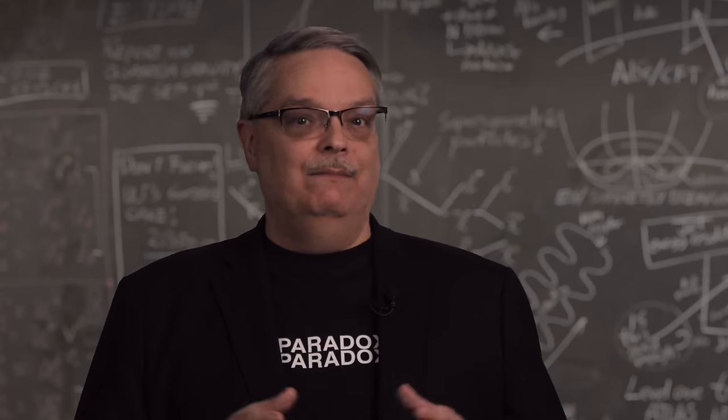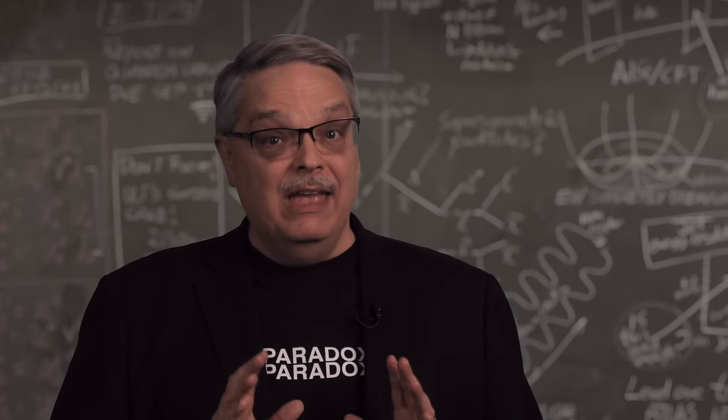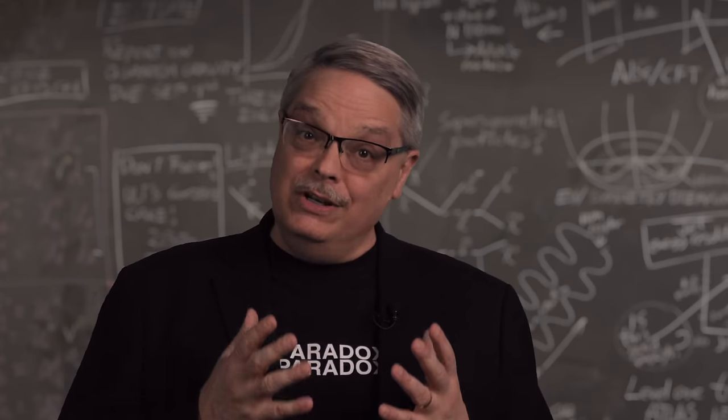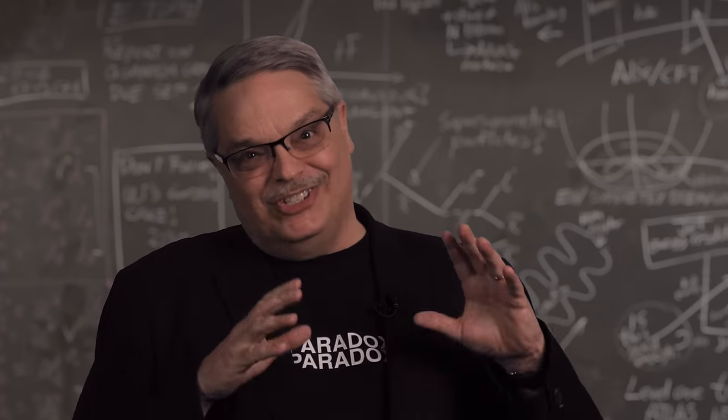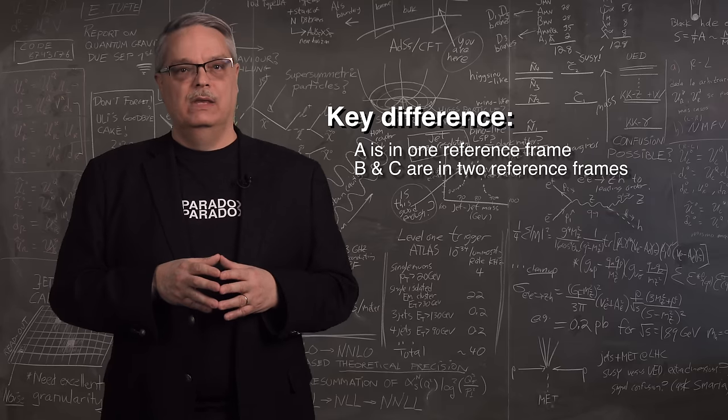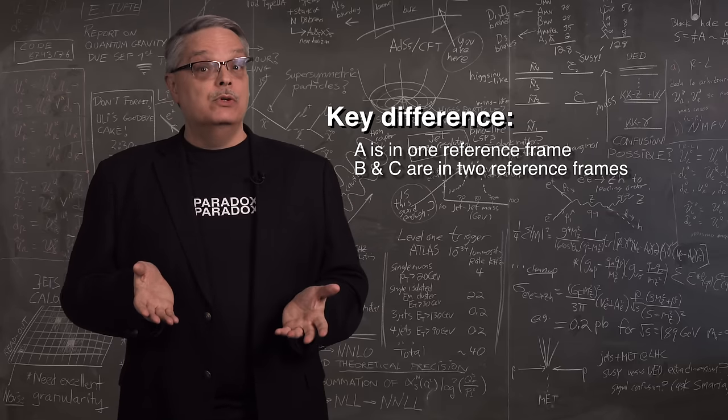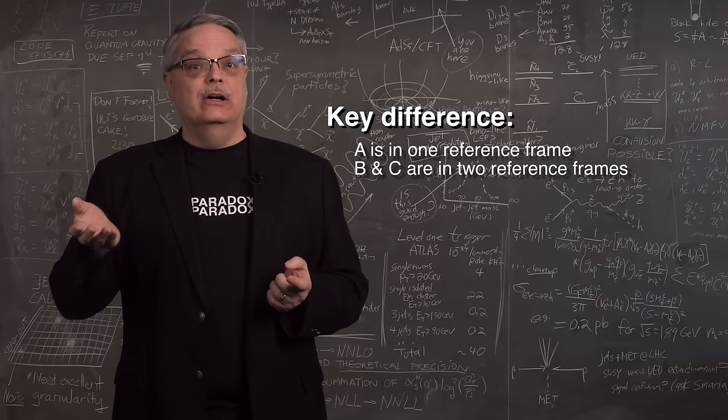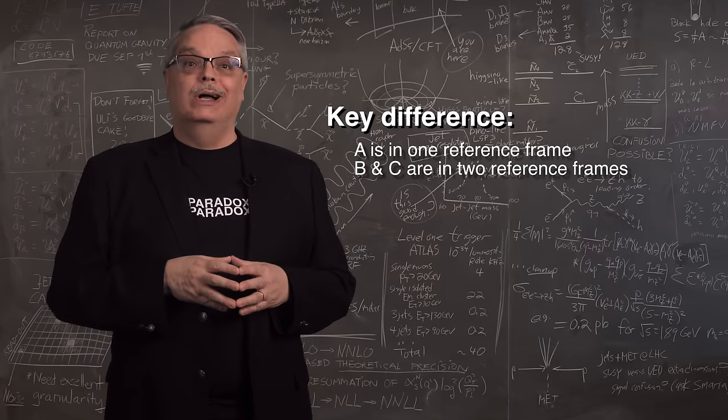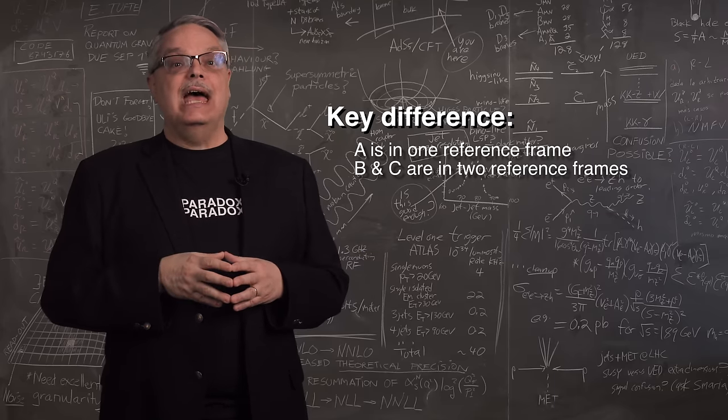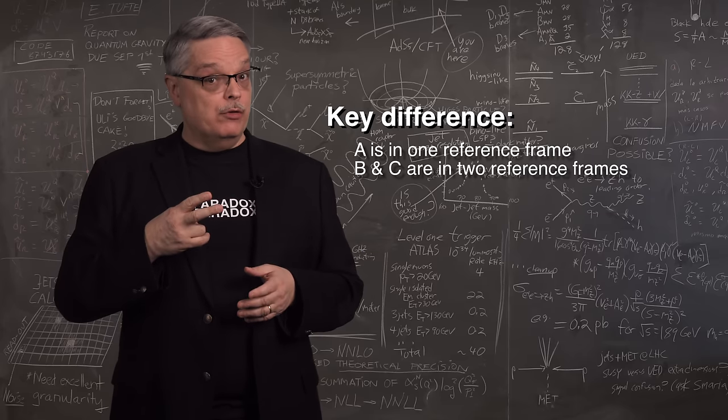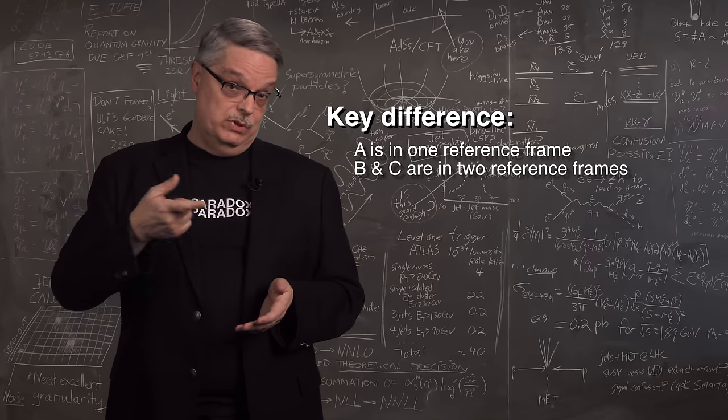So why is that? It's not acceleration. After all, in my example, there is no acceleration. So that just can't be it. The difference is that observer A is in a single and unchanging reference frame, while to get the moving frame, you need to add up the time experienced in two frames, B's outgoing and C's incoming.